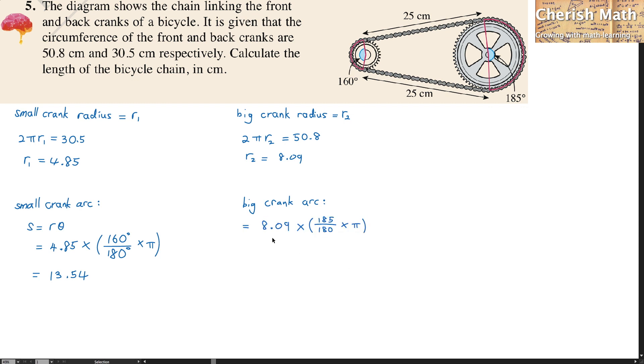that is going to be 8.09 times 185 degrees over 180 degrees times π, which equals 26.12.